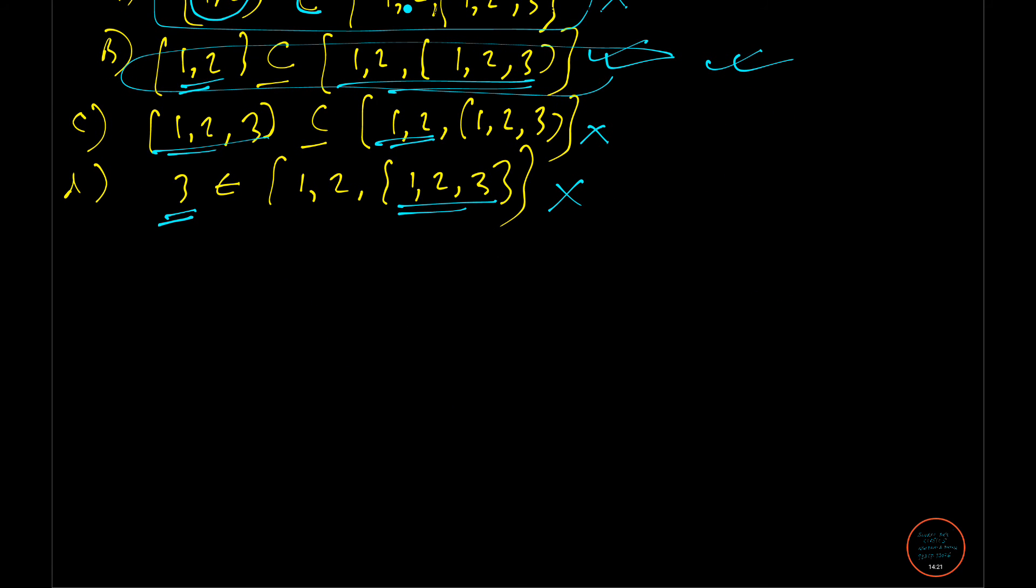Now we are proceeding to question number 28. Question number 28 is dealing with many of you asked me what is this sign, what is this delta. This is actually called symmetric difference. That is if I write A delta B, so that means A minus B union B minus A. So simple. So diagrammatically this is the area we will be looking for.